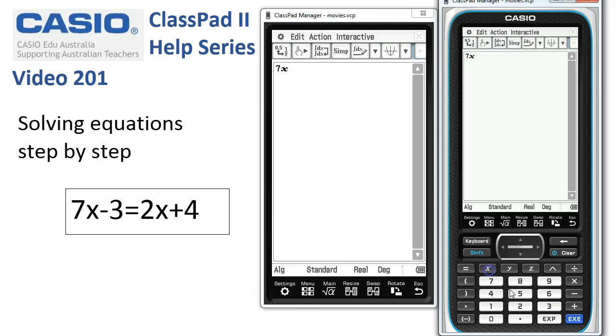So 7x subtract 3 is equal to 2x plus 4. And we'll tap execute just to make sure nothing's gone wrong yet. Now the first thing we want to do is probably add 3 to both sides of the equation.